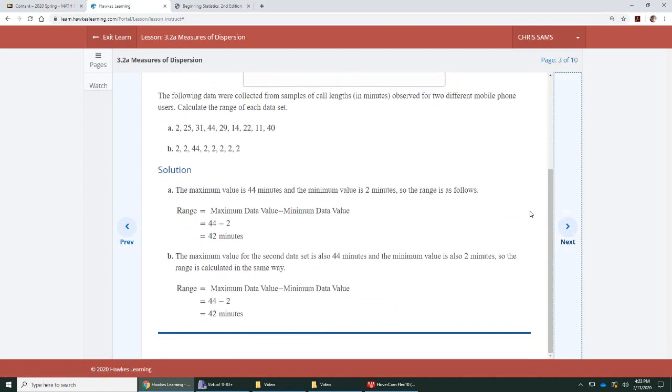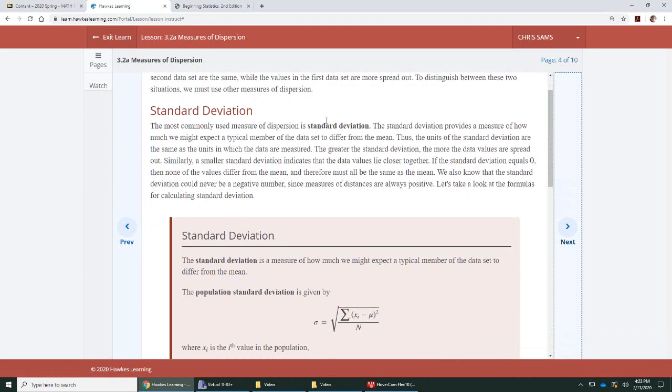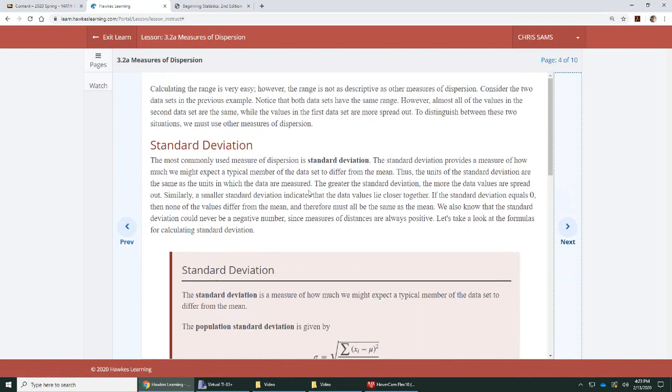Here are some examples in Hawks, so you can look through those. Now, standard deviation, this is the most important one that we're going to be using. Standard deviation basically tells you how far each data value is from the mean on average.